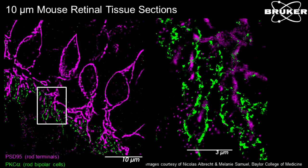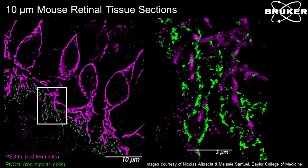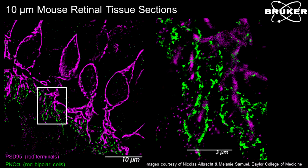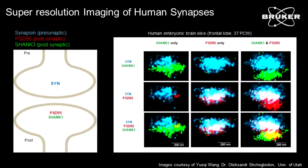Because we don't do point spread function engineering, it's quite simple to do tissue sections. Here we have a similar experiment looking at two different types of neurons, this time in retinal tissue. In magenta, PSD-95 is labeled in the rod terminals, and in green PKC-alpha shows the rod bipolar cells. What you can't see in standard imaging is how these rod bipolar cells interpolate between the synapses of the PSD-95 labeled rod terminals. We can also do this in human sections — characterizing synapses in human tissue sections, just 10 micron sections — and characterize the size and localization of different classes of synapses within the human frontal lobe.